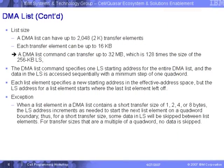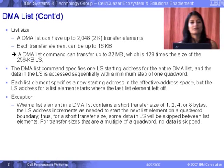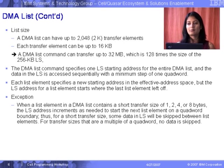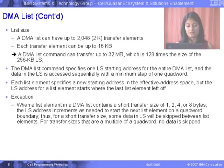First, you have to specify the starting effective address where it needs to begin collecting data, and then incrementally the offset keeps increasing as data is collected. Any DMA list can transfer 1, 2, 4, 8, or multiples of 16 bytes up to a total of 16 kilobytes. The local store address also increments — you need to specify a starting local store address, and every time data is fetched through a list element, it keeps incrementing.